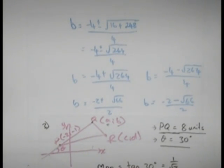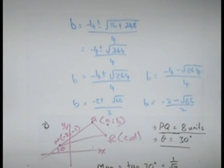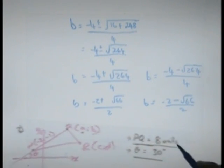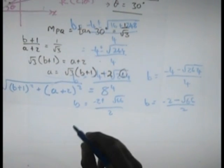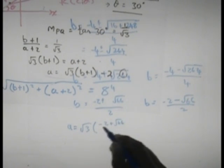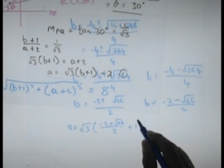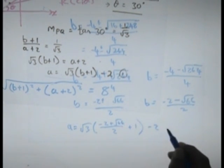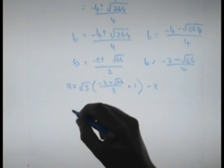The next thing we are going to be looking at, by the way, if we are working with this point Q, our b value is going to be minus 2 plus root 66 over 2. We've now got to substitute that in there to get our a value. That means that a would equal root 3 times minus 2 plus root 66 over 2 plus 1. That's b plus 1 minus 2.